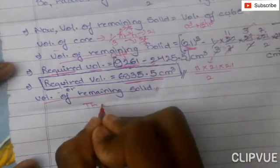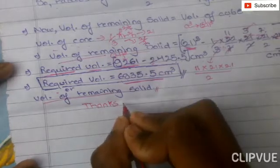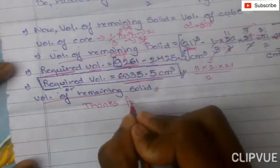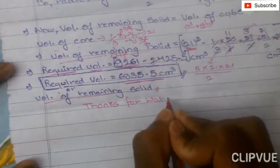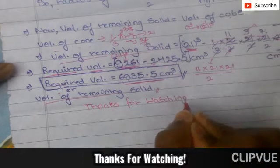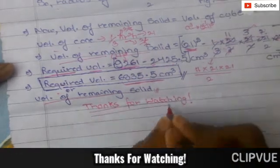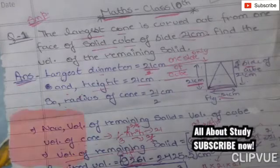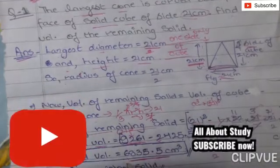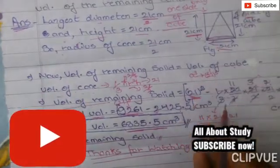After removing the volume of the cone from the cube, the required remaining volume is 6835.5 cm³.